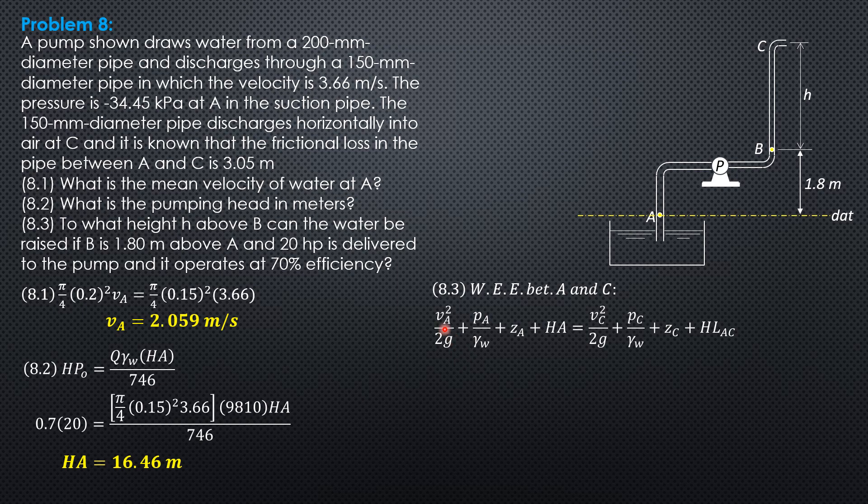We have velocity head at A is 2.059 squared over 19.62 plus negative 34.45 over 9.81 plus 0 plus 16.46 equals 3.66 squared over 19.62 plus 0 because it is exposed to the atmosphere. G sub C is 1.8 plus H and plus head loss 3.05.